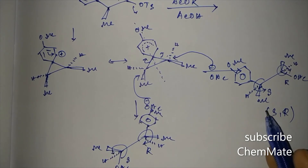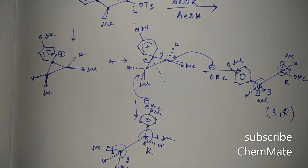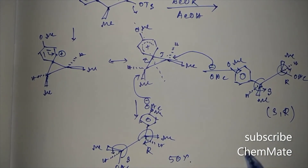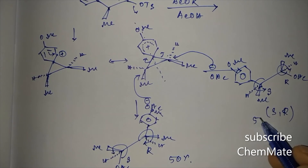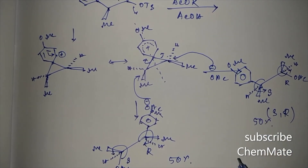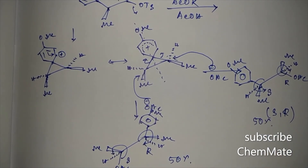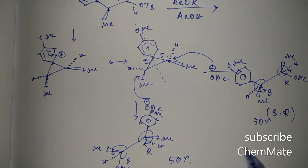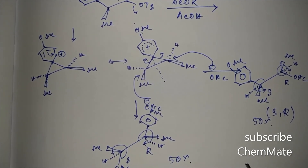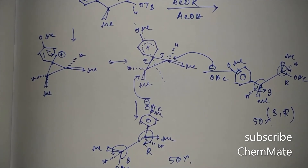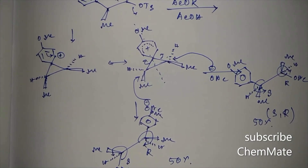Since each enantiomer is produced in 50% amount, the mixture is a racemic mixture and will therefore be optically inactive.